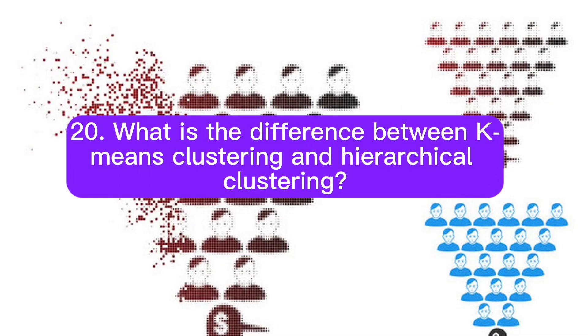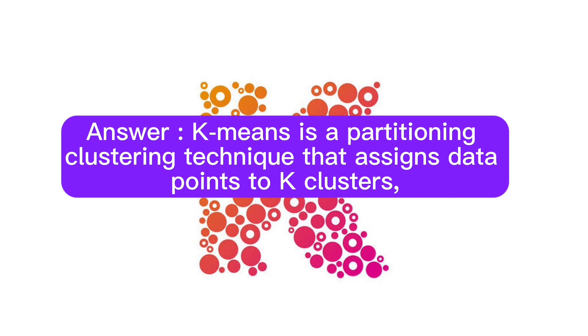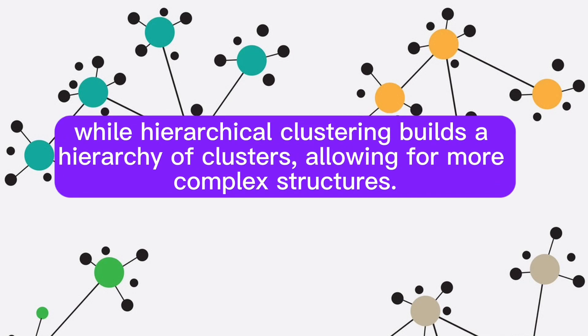Question 20: What is the difference between K-means clustering and hierarchical clustering? Answer: K-means is a partitioning clustering technique that assigns data points to K clusters, while hierarchical clustering builds a hierarchy of clusters, allowing for more complex structures.